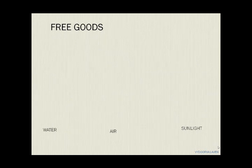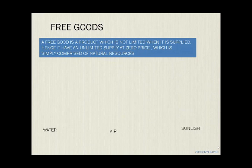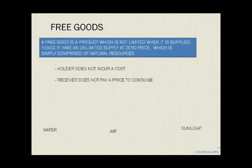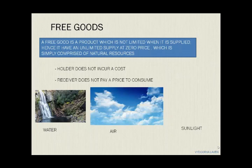A free good is a product which is not limited when it is supplied — hence it has an unlimited supply at zero price, which is simply comprised of natural resources. Its features are that the holder does not incur a cost, and the receiver does not pay a price to consume it. Consumers consume such goods free of charge. Major examples are water, air, and sunlight.